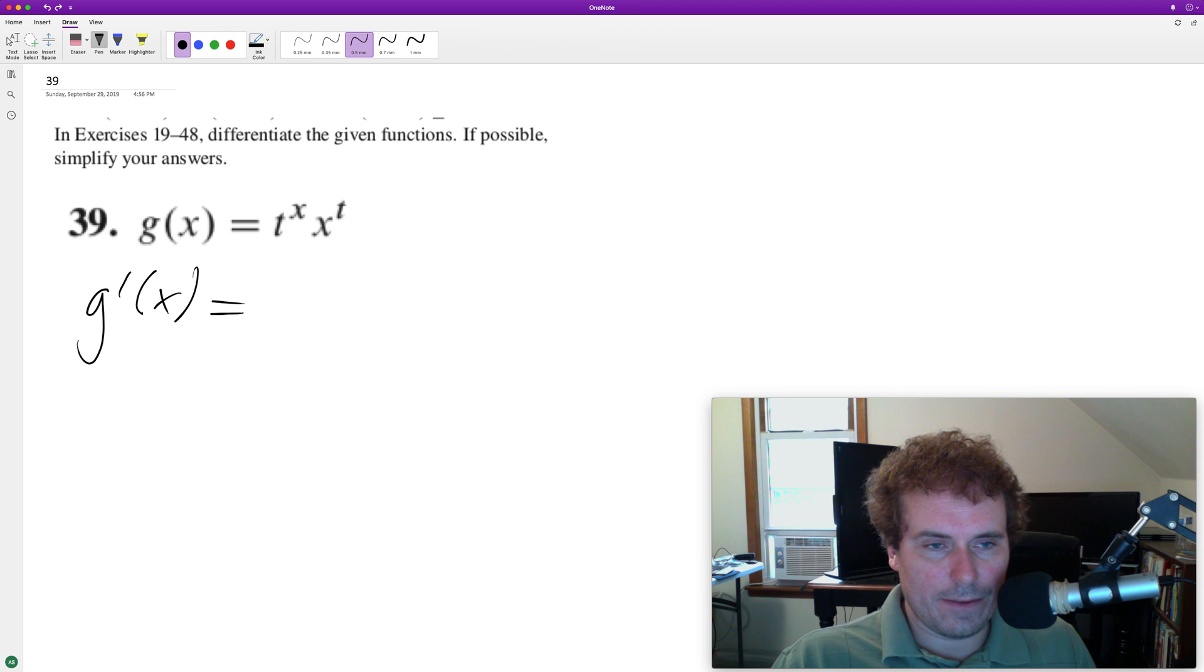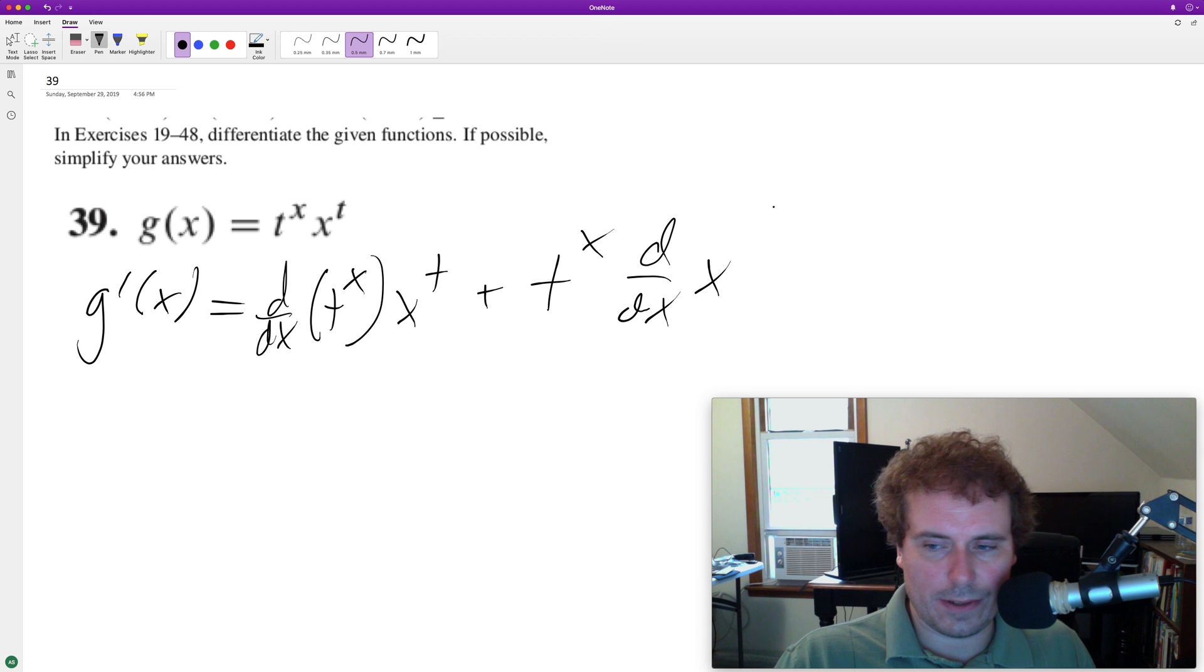So we're going to have the derivative of x. When we take the derivative of t^x, we're using the product rule. Let me rewrite this. So it's going to be d/dx of t raised to the x times x to the t, plus t raised to the x times d/dx of x raised to the t.